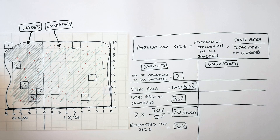To calculate the estimated population size you can also simply multiply the mean per quadrat by the total area: 0.4 × 50 = 20 flowers, giving the same estimated population size.